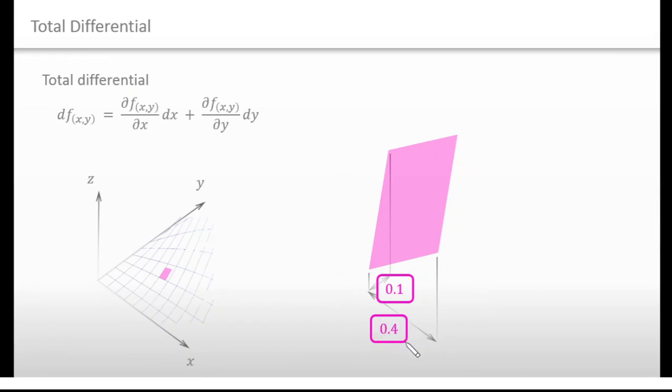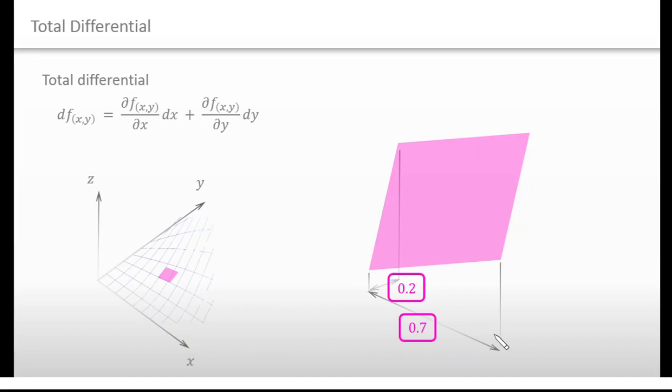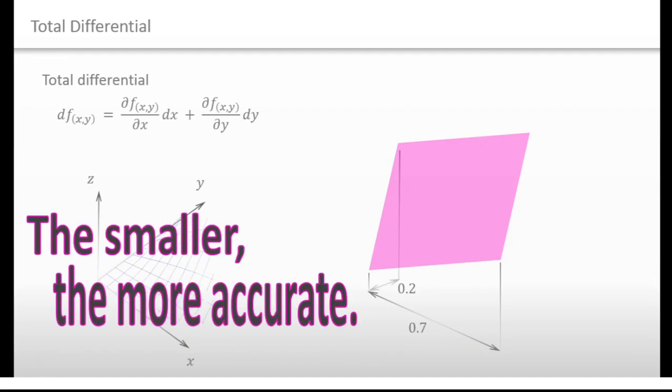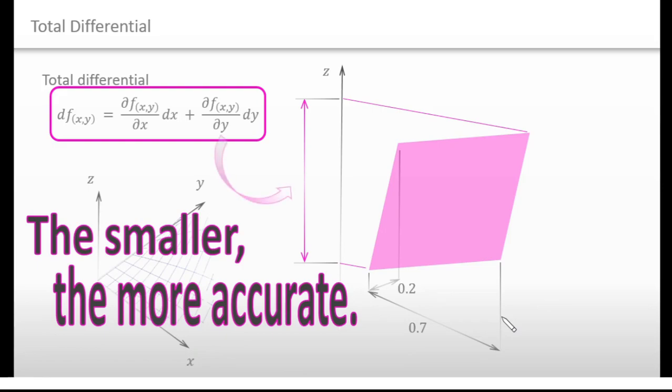I mean, it's okay if you apply this equation to this situation. dx is 0.4 and dy is 0.1. And it's also okay if you apply this equation to this shape. In this case, dx is 0.7 and dy is 0.2. dx and dy can take any value, but I'd like you to pay attention to this. The smaller this shape is, the more accurate this approximation is. This is total differential.